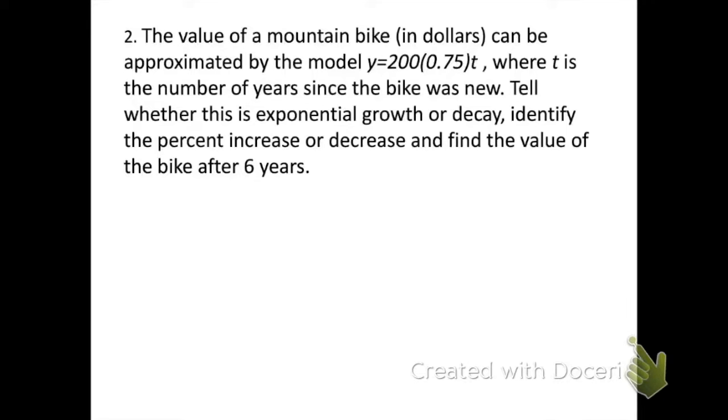Example 2. The value of a mountain bike can be approximated by the model y equals 200 times 0.75 to the t, where t is the number of years since the bike was new. Tell whether this is exponential growth or decay, identify the percent increase or decrease, and find the value of the bike after six years. So we've got three things to do here.